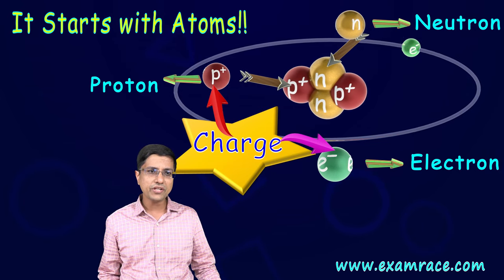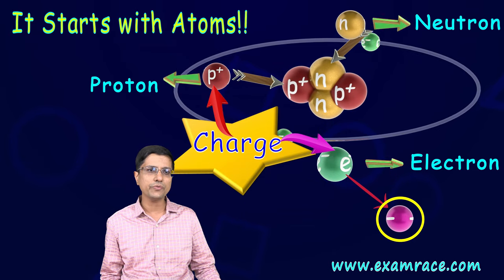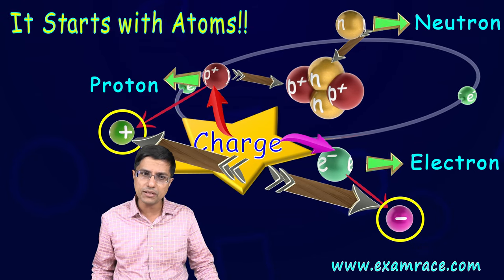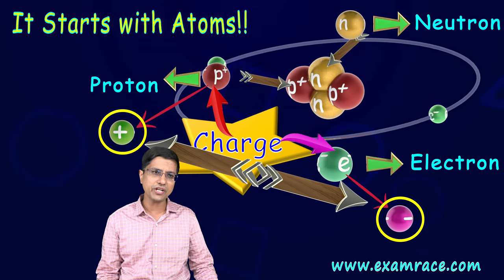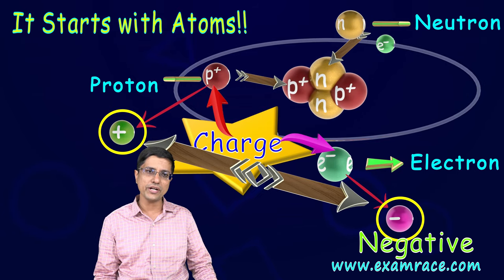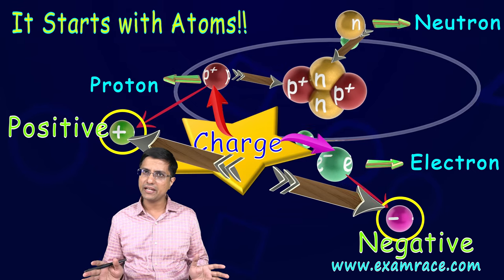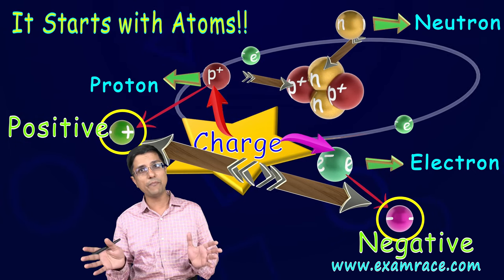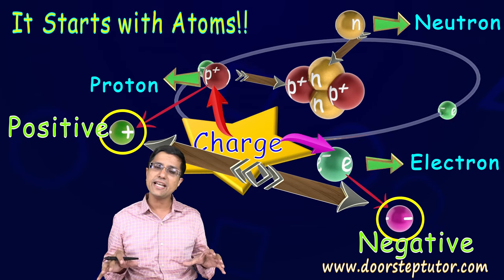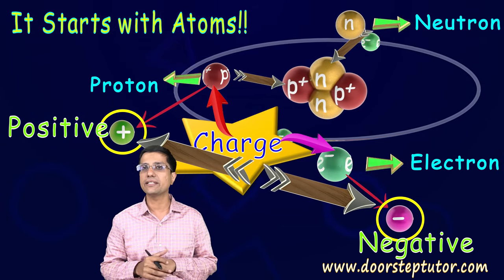The charge on an electron is different from the charge on a proton. Scientists did some experimentation and understood this difference. To keep things simple, they named the charge on the electron as negative and the charge on the proton as positive. Understand that this naming was one hundred percent arbitrary — I could have called one Jill and another Jack. It is just a convention that the charge on an electron is negative and on the proton is positive.